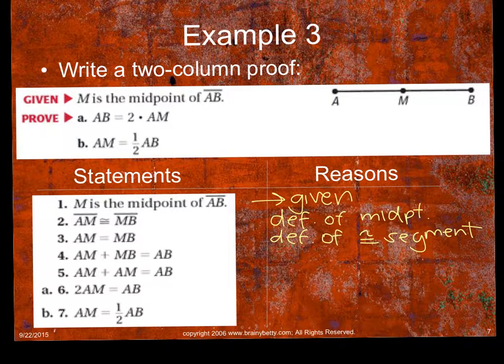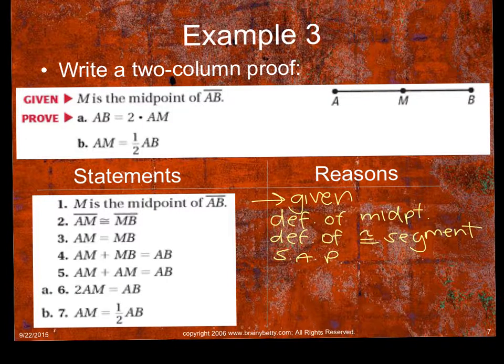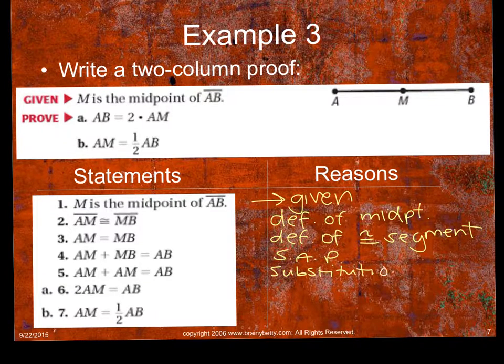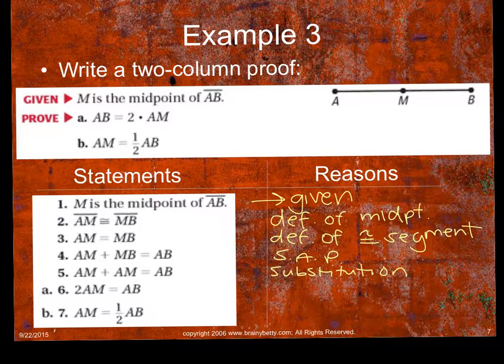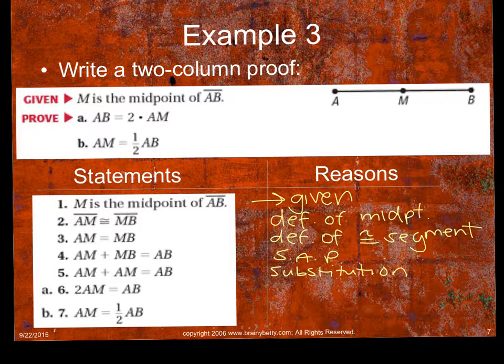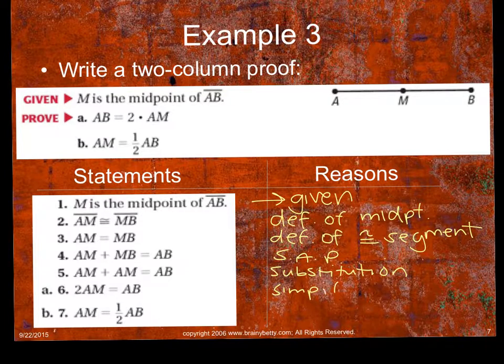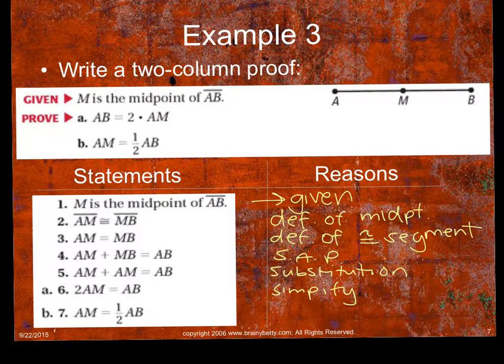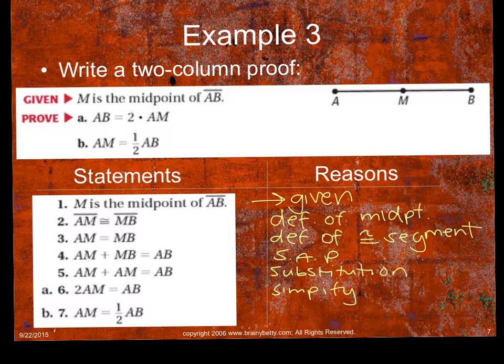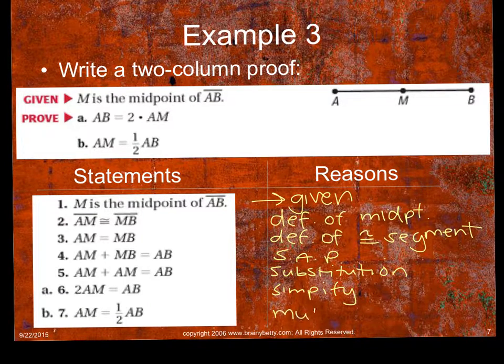Now 4 says AM plus MB equals AB. What is this? Segment addition postulate. The whole equals the sum of its two parts. AM plus AM equals AB. What just happened there? You substituted it in. And 6 says 2AM equals AB. Combining like terms, in another word for that is simplifying. And then AM equals 1 half AB. So this is kind of a loose step. I'll either give you division or multiplication because it's kind of the same thing. You're either dividing by 2, which is multiplying by the reciprocal.